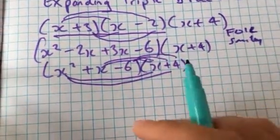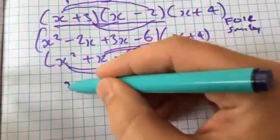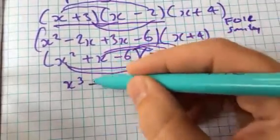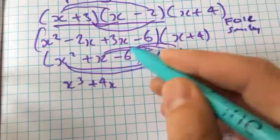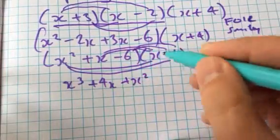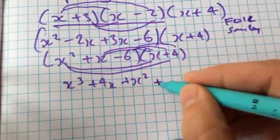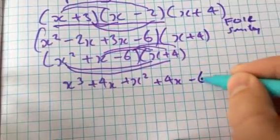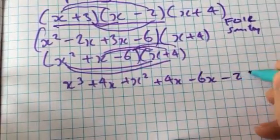I should now have six terms. So I should have x cubed plus 4x plus x squared plus 4x minus 6x minus 24.